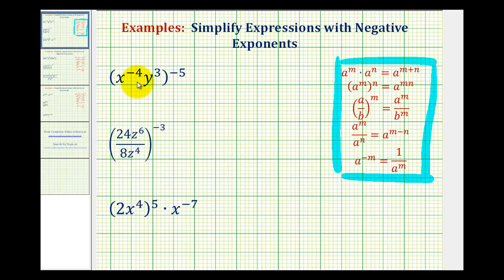Looking at the first example, we have powers raised to powers, which means we're going to multiply the exponents. So I'll have x to the power of negative 4 times negative 5, that's positive 20, and y to the power of 3 times negative 5, that's negative 15.